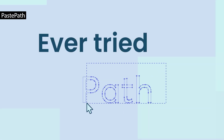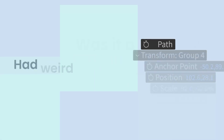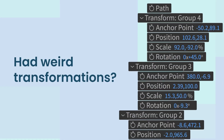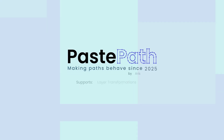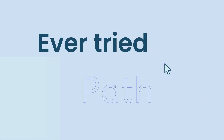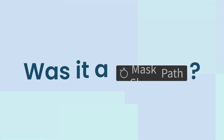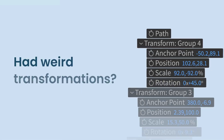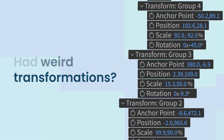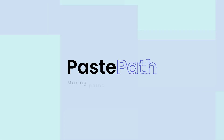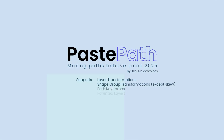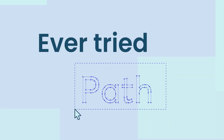Paste Path is a focused utility that makes copying and pasting paths reliable and predictable. It allows you to transfer mask and shape paths while preserving spatial position, transformations, and both static and keyframed animations. Paths can be pasted as masks or shapes, applied to existing paths or used to generate new shape layers, making it ideal for VFX, motion design, and cleanup workflows. This was by far my most favorite and most used new tool of 2025.